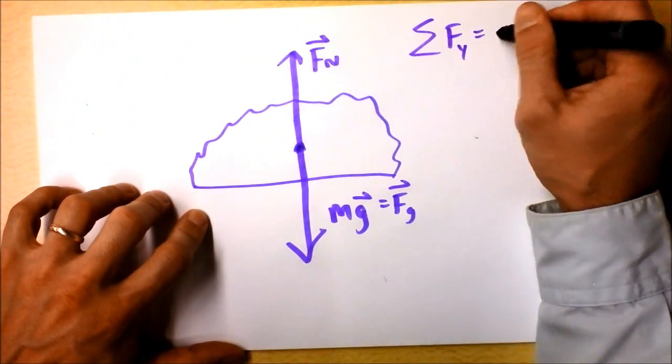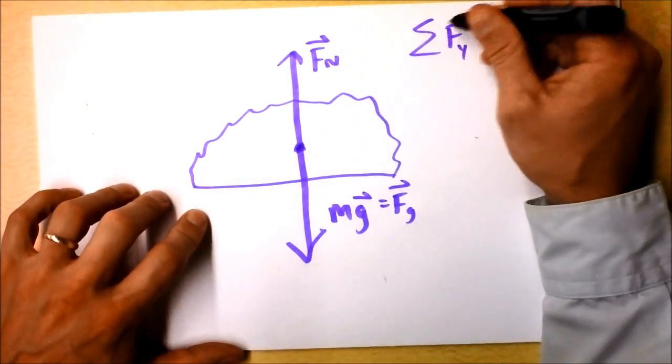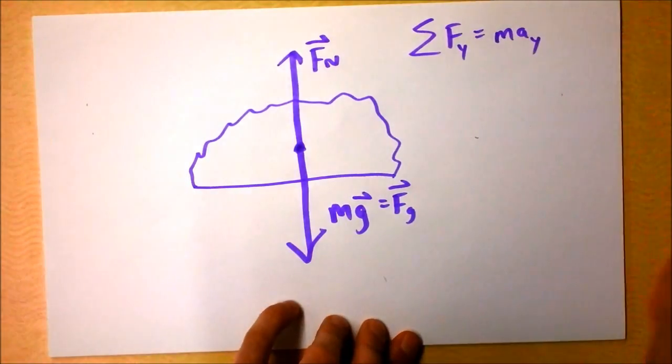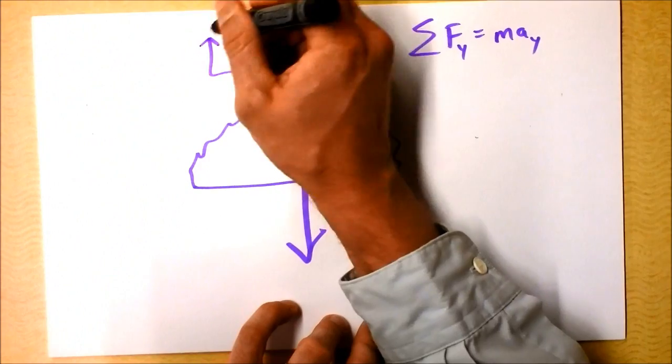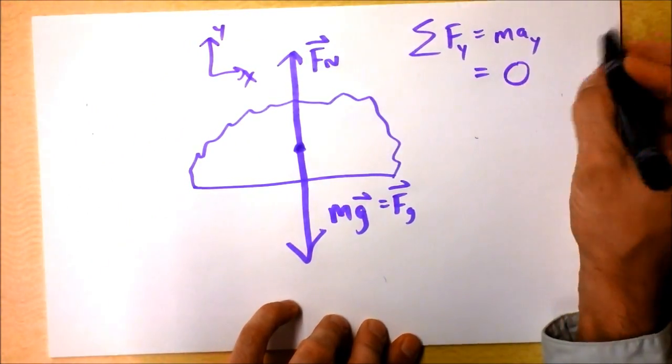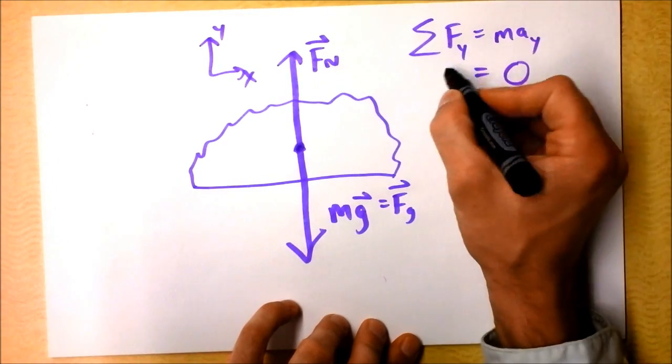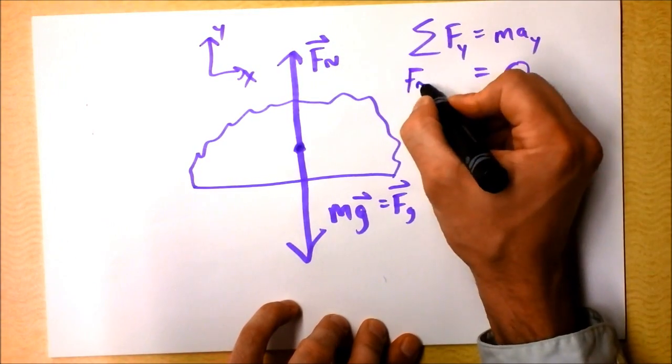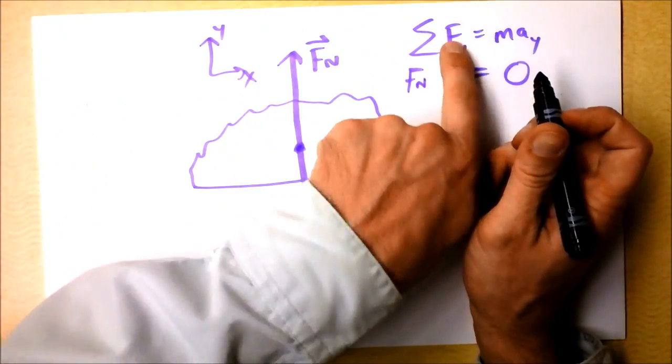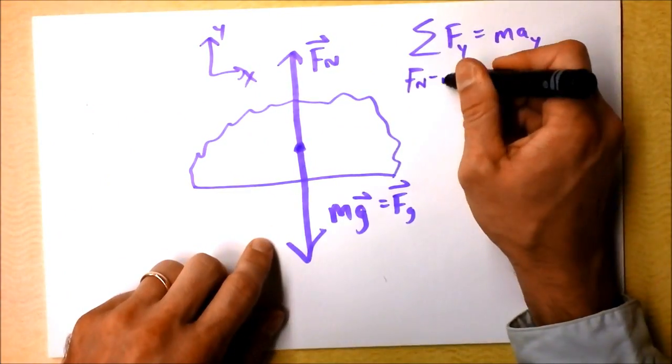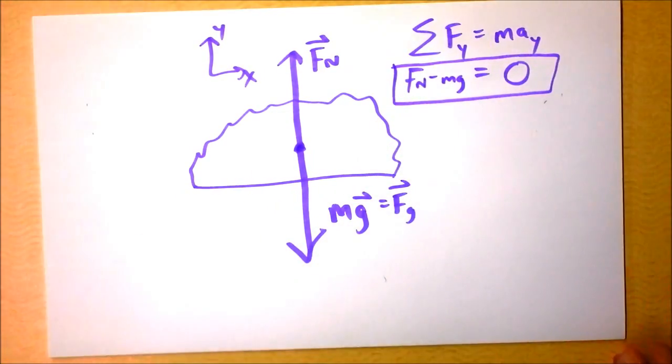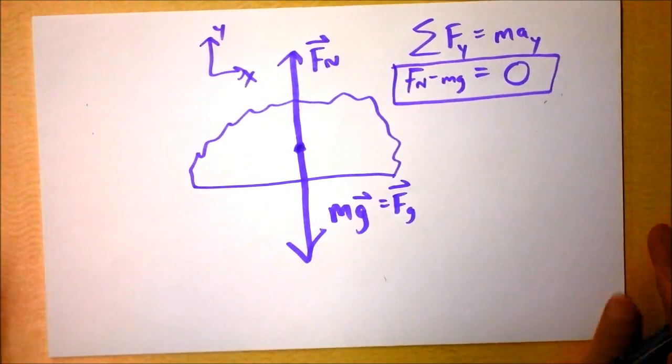So let's write that out. I'm going to say that the net force in the y direction is mass times acceleration in the y direction. And I'm not putting vector hats on there because I've already said in the y direction. Mass times acceleration in the y direction is zero because there's no acceleration in the y direction. There's a force up in the y direction. That's the normal force. And then I have to subtract mg. This is a brand new equation that we just made and we can use it.